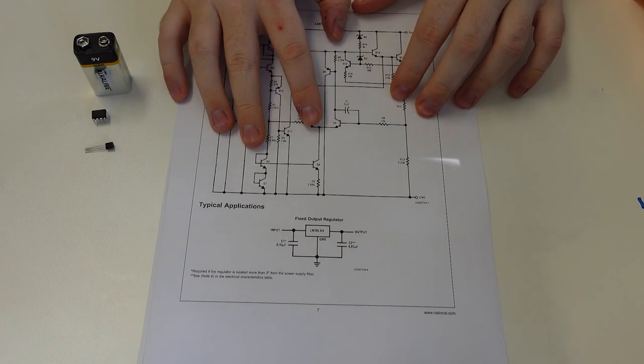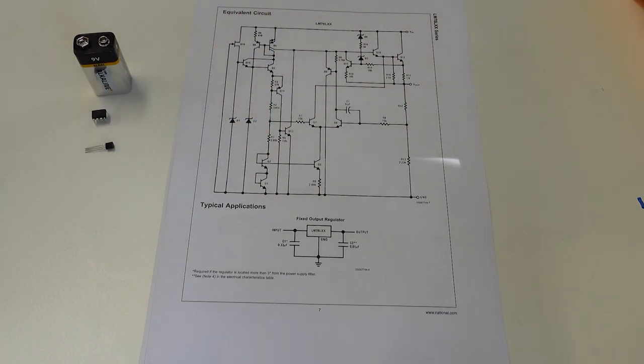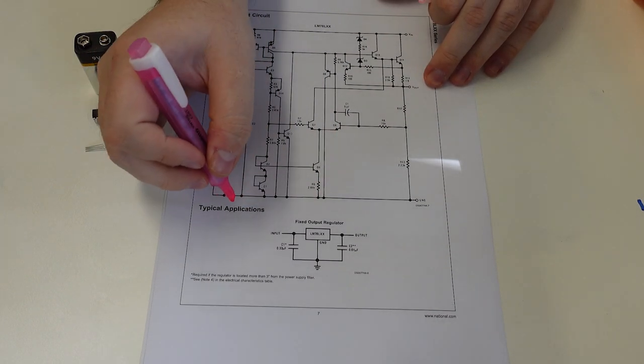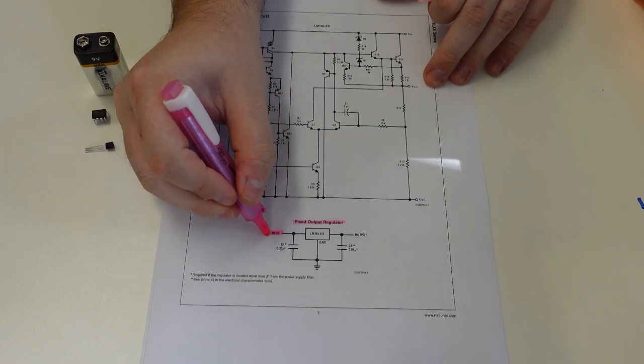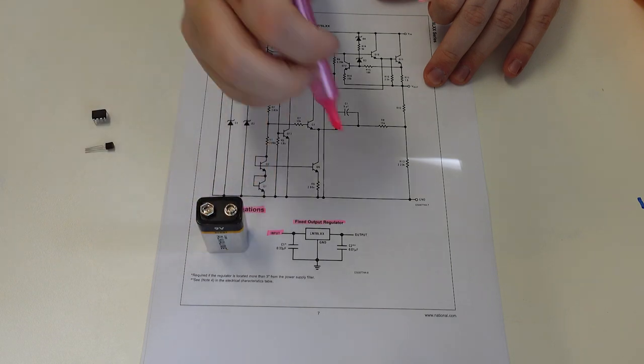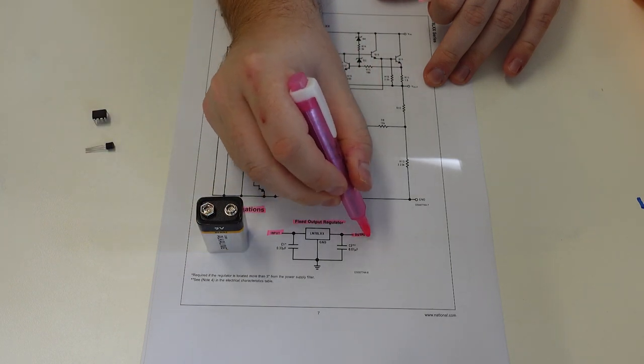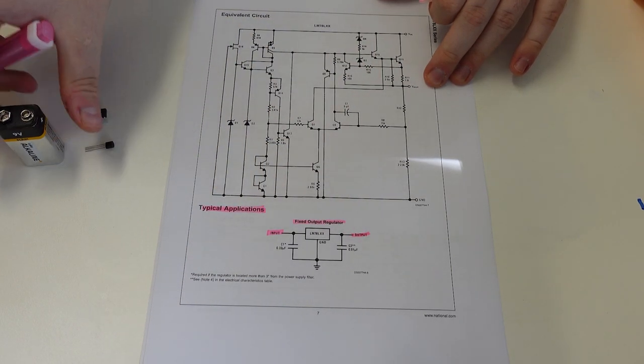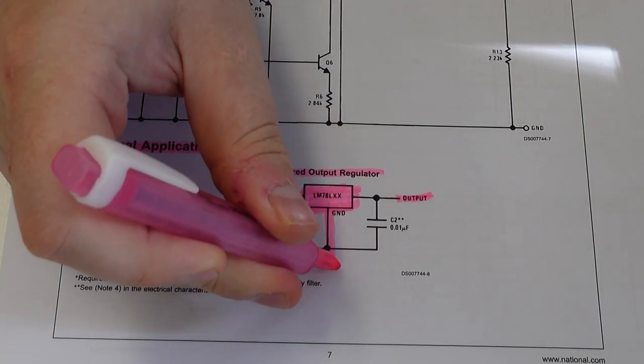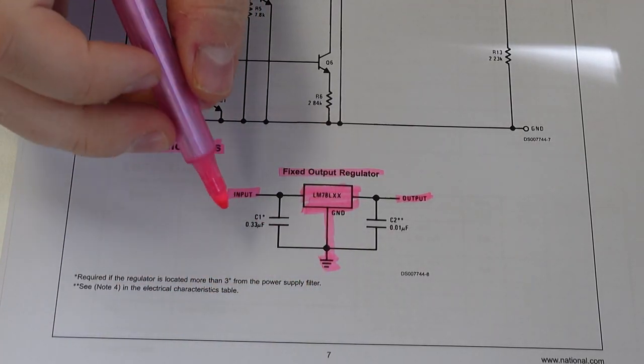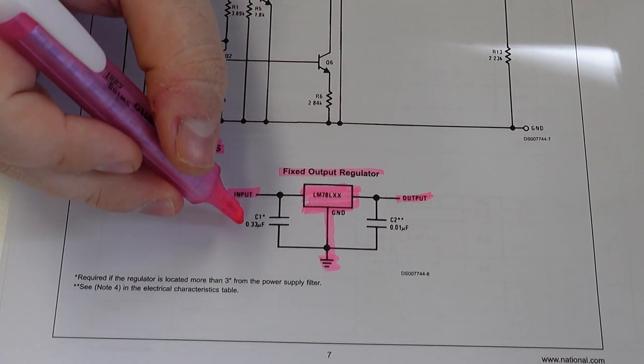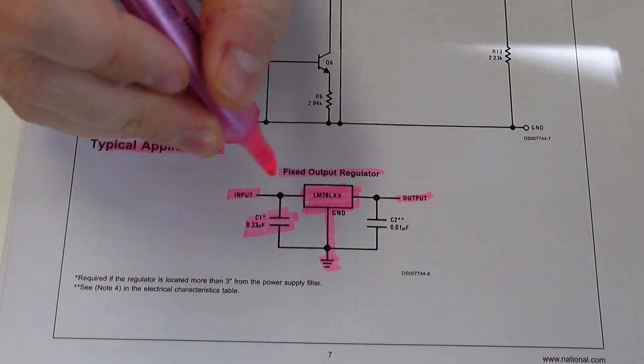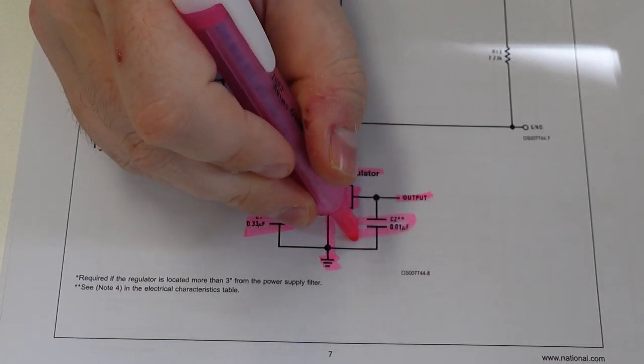So this big circuit is actually what is inside this little chip. That's how it functions. But what we care about is the typical application circuit indicated at the bottom. So we can see it's got input, which will be the input from our 9 volt battery, and we've got our output, which is the output to the rest of our circuit. It's got the middle lead which connects to the ground. And then in addition to that it has two capacitors. So it's got C1, which says 0.33 microfarad, and it's got C2, which says 0.01 microfarad.